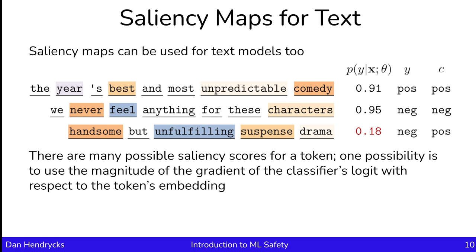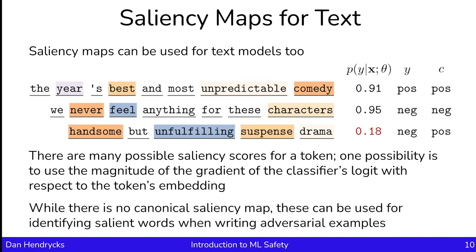There are many possible saliency scores for a token. One possibility is to use the magnitude of the gradient of the classifier's logit with respect to the token's embedding. We're looking at the classifier logit that's affecting the probability, computing the gradient of that, then computing its magnitude to get an overall sense of how it's changing with respect to the token embedding. Remember, the token, although it's a discrete thing, is embedded as a vector. So we're perturbing that vector and seeing how it can affect the magnitude of the gradient of the logit. While there isn't a canonical saliency map that's clearly best, these saliency maps can be used for identifying salient words, which becomes useful when trying to write adversarial examples to break a model.